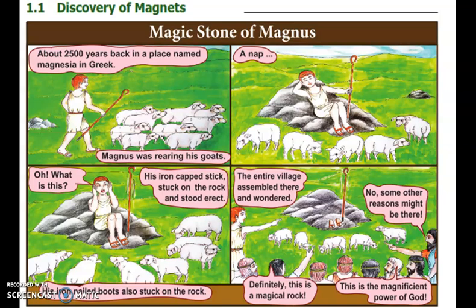So that is what we are going to observe and check. Next is the discovery of magnetism. About 2500 years back, in a place named Magnesia in Greece, a shepherd named Magnus was rearing his goat.